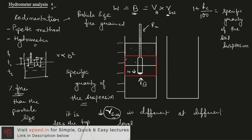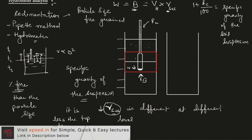The basic idea here is the same as the pipette method: if we are taking the measurement at a given level, then above that level all particles present will be smaller than a particular size d. This depends on the velocity of settlement found using Stokes' law: v = (G_s - 1) × d² × γ_w / (18 × μ). Above a particular level where we take the reading, only particles with diameter smaller than d will be present.